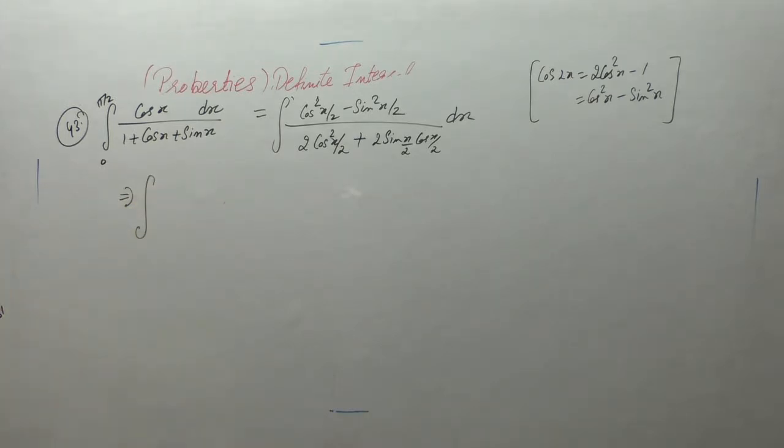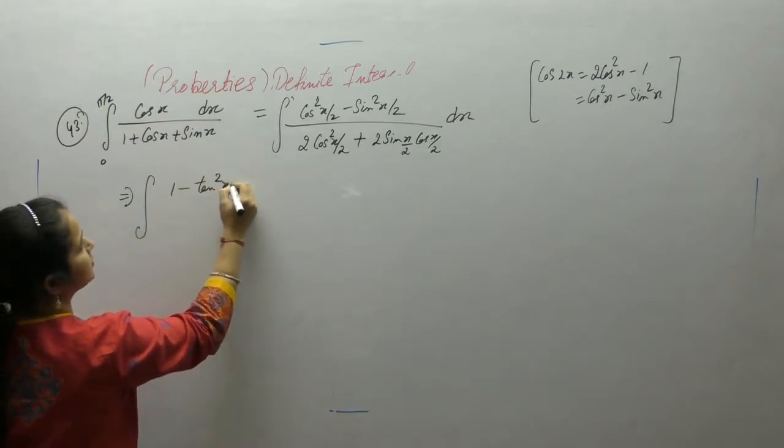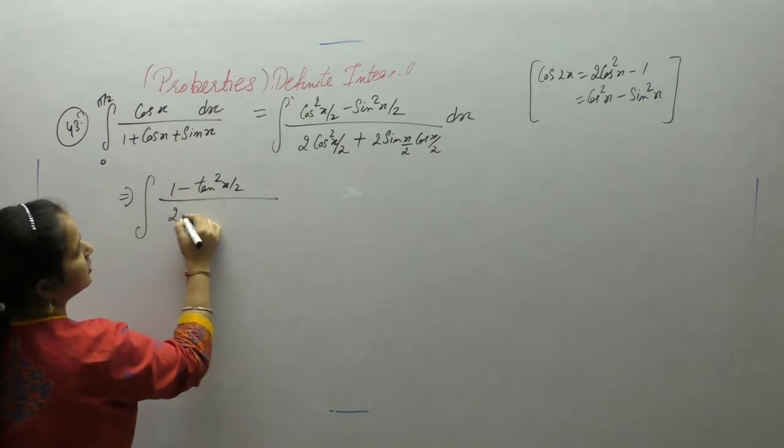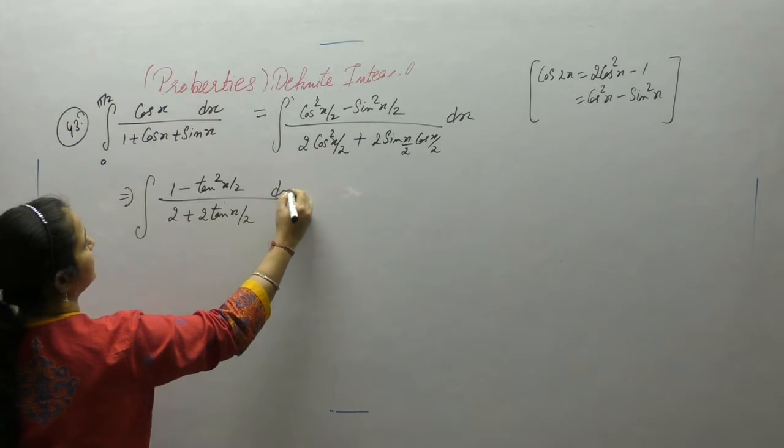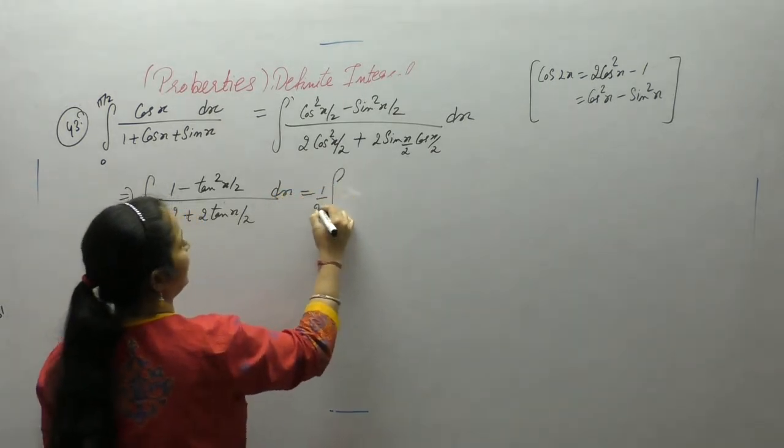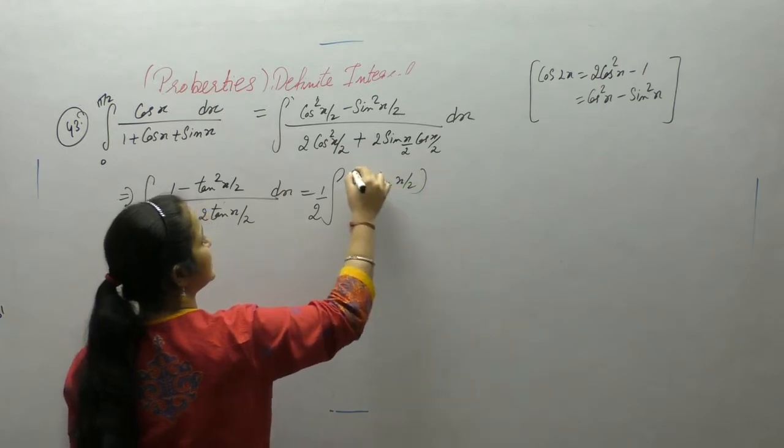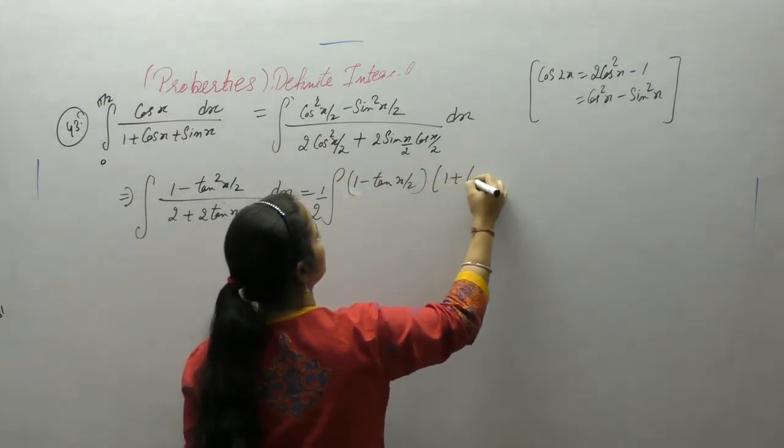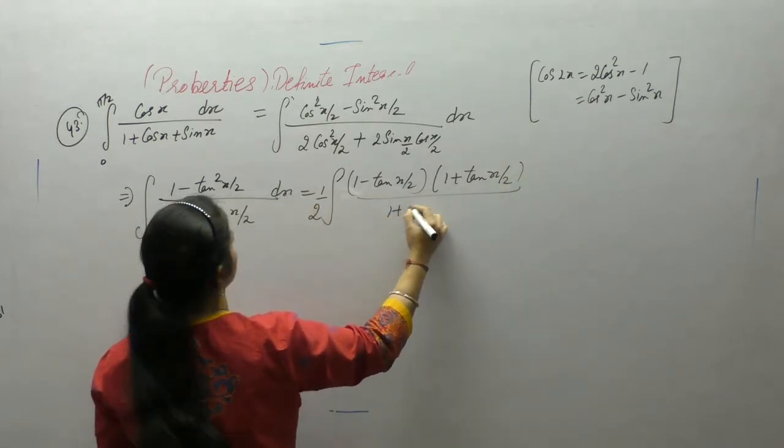Now divide the numerator and the denominator by cos square x by 2. Sin upon cos is tan. 1 upon 2 common, a square minus b square is equal to a minus b upon a plus b.